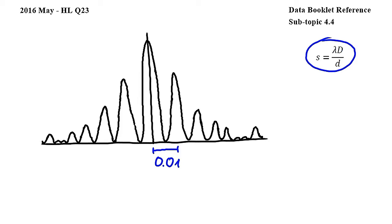Let's now turn to the equation on the right hand side from subtopic 4.4, where s is the fringe spacing, lambda is wavelength, capital D is the distance of the slits from the screen where the pattern is observed,